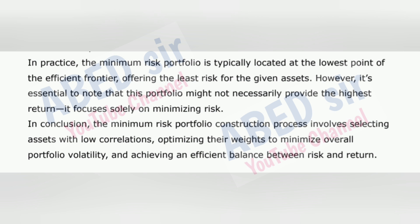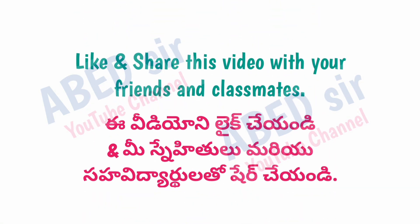In conclusion, the minimum risk portfolio construction process involves selecting assets with low correlations, optimizing their weights to minimize overall portfolio volatility, and achieving an efficient balance between risk and return.